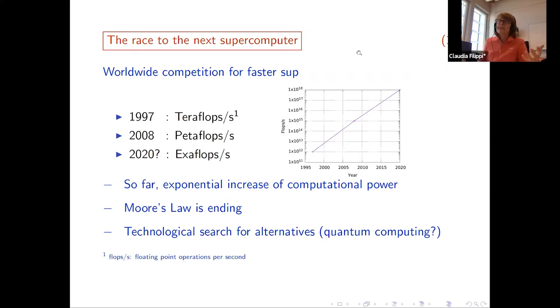So there is this worldwide competition for faster supercomputers with more computational power from teraflop, petaflop, and now we are entering exaflop. So I plotted it as a function of time - you have so far an exponential increase in computational power. But we know that it's close to an end, and so in parallel there is also a search for a new technological breakthrough, an alternative breakthrough. And people are looking into quantum computing, I'm putting a question mark here.